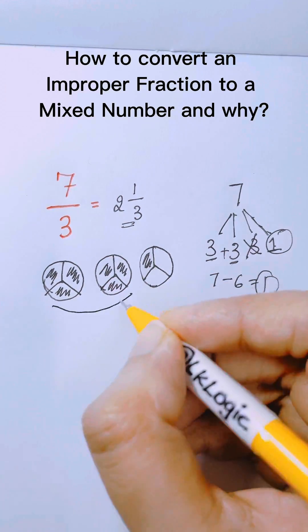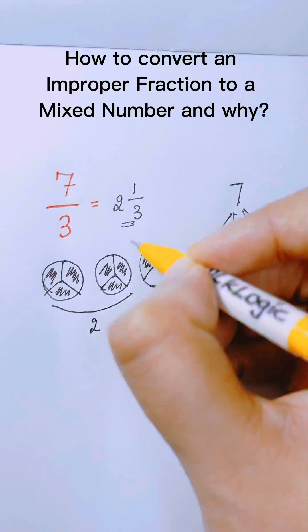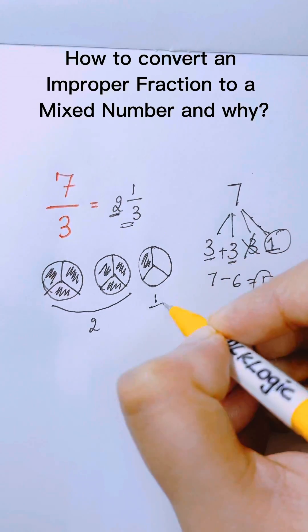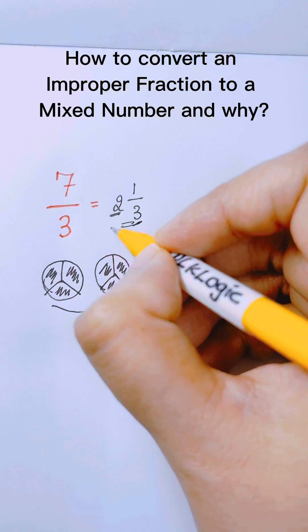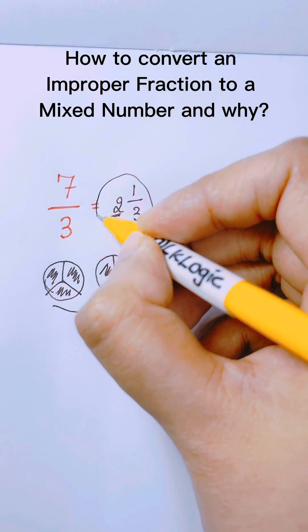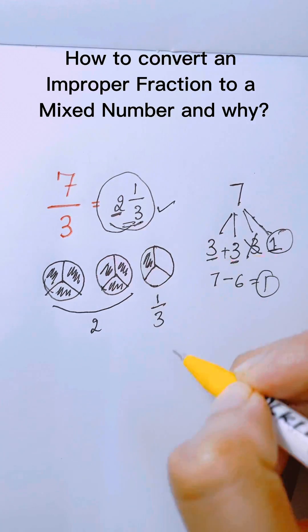Check this out. We have 2 holes and a third to represent a 1 third. And that's why dividing the numerator with a denominator works to convert an improper to a mixed number.